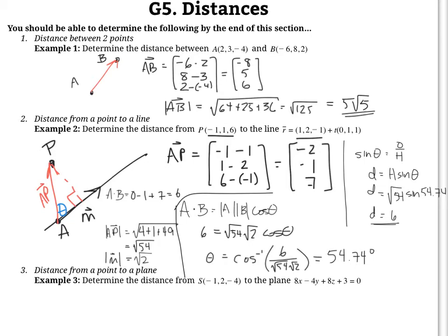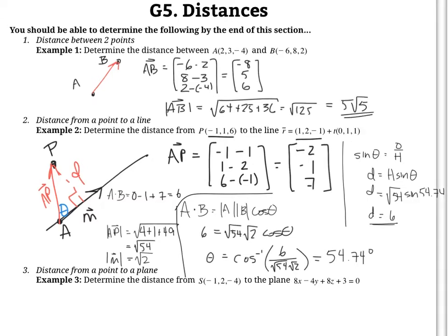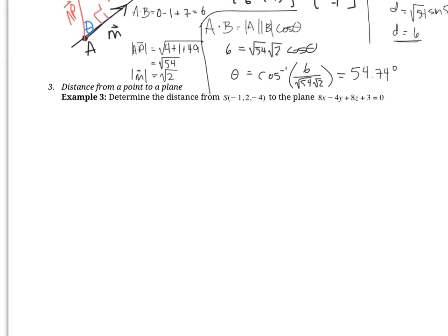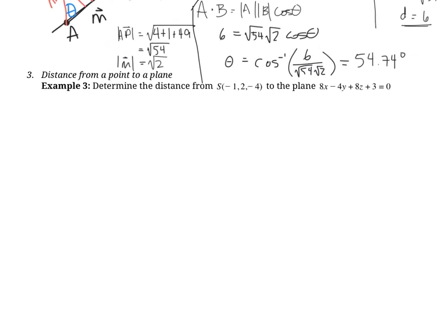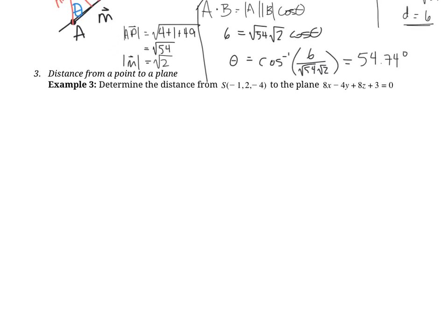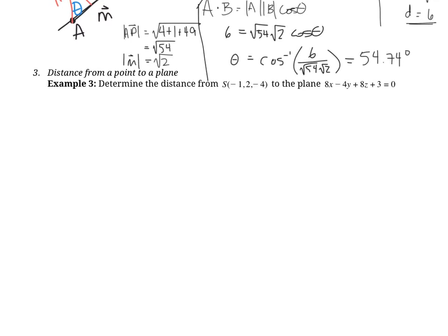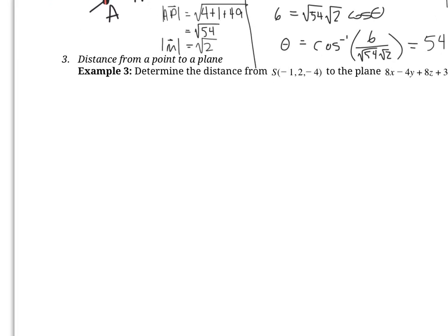The next type is the distance between a point and a plane. This one is actually a little bit easier than the previous one — the calculation is more straightforward, though the concept is maybe a little bit trickier.